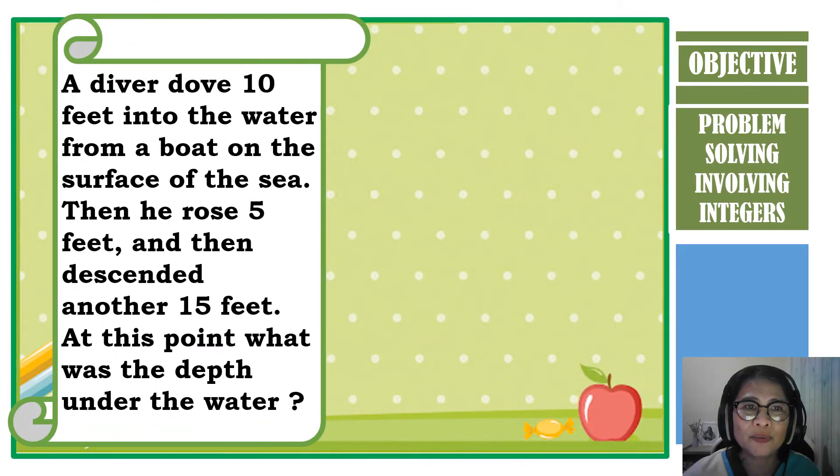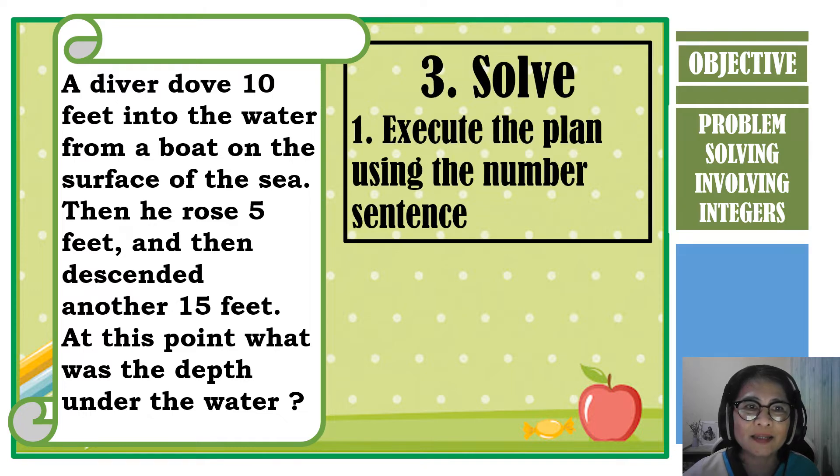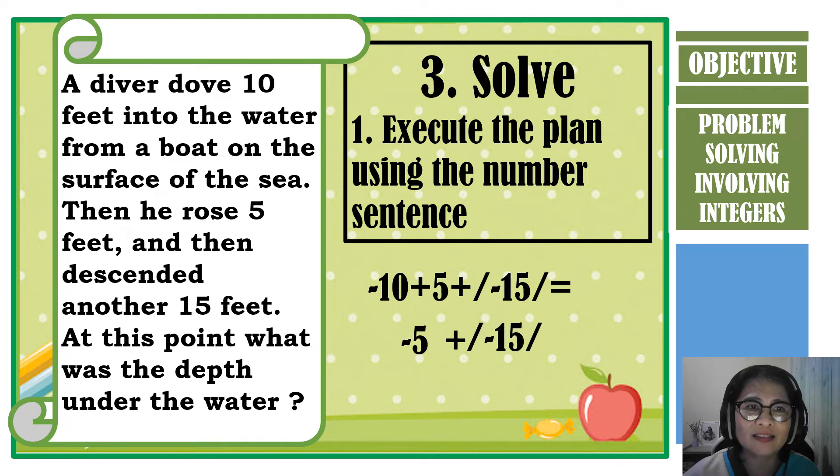After planning, we are ready to solve the problem. Let us add the number sentence. If we add negative 10 and 5, it will give us negative 5. And if we add negative 5 and negative 15, it will give us the answer of negative 20. So therefore, our answer is negative 20.